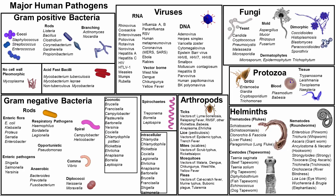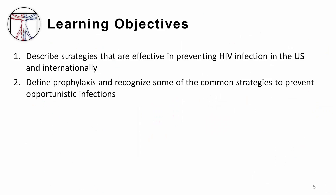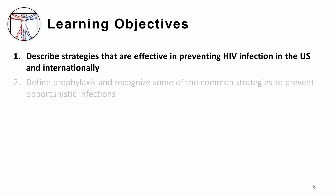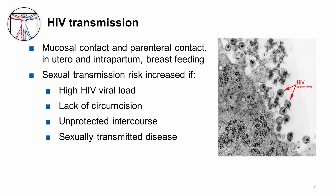Here's our pathogen map that we've discussed time and time again, and here is HIV. These are our learning objectives for this module. We're going to describe strategies that are effective in preventing HIV in the U.S. and internationally, and define prophylaxis and recognize some of the common strategies to prevent opportunistic infections. Let's start with strategies that are effective in preventing HIV in the U.S. and internationally.